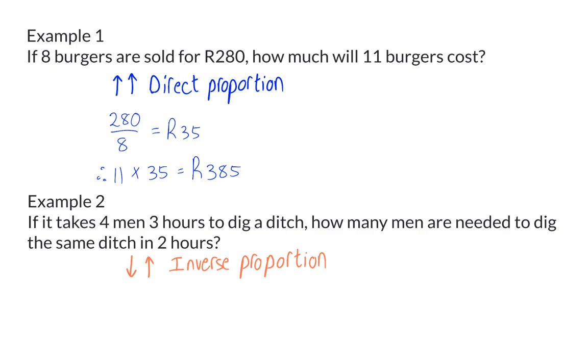For inverse proportion, you start off by determining the constant product. So, we will take 4 men and multiply that by 3 hours to get 12 hours. This implies that 1 man will dig the ditch in 12 hours.